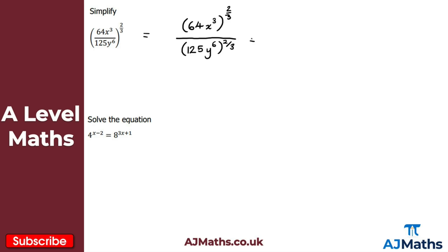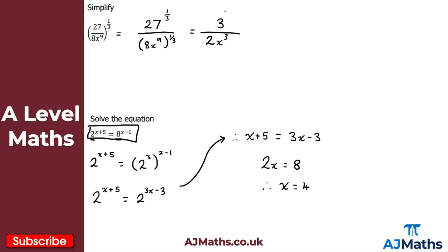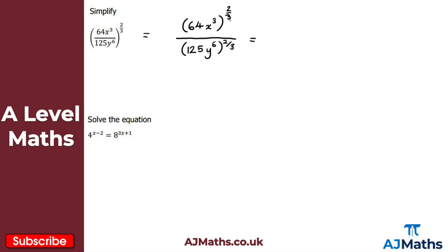For the numerator, I consider it in two parts. First, 64 to the power of 2 over 3: this is more complex because the numerator of the fraction is 2. We take the cube root of 64, which is 4, then square it because the numerator is 2 — giving 16. For the x cubed part, we've got a power raised to another power, so we multiply: 3 times 2 thirds gives 2. So the numerator simplifies to 16x squared.